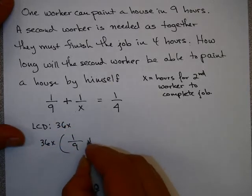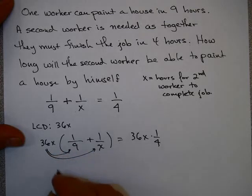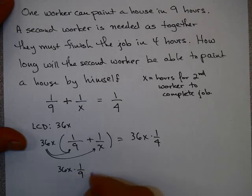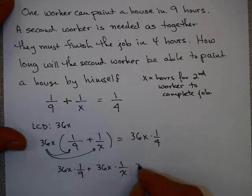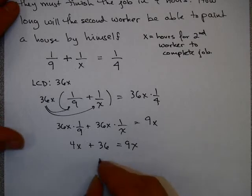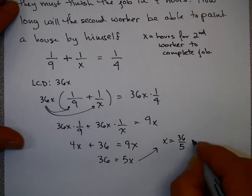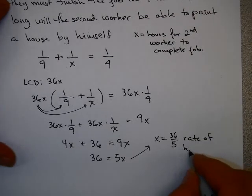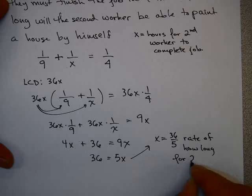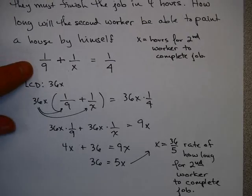Lowest common denominator is 36x. 36x times 1/9 plus 36x times 1/x equals 36x times 1/4. Distribute the 36x: that's 36x times 1/9 plus 36x times 1/x equals 36x divided by 4. Here you get 4x plus 36 equals 9x. Subtract the 4x, 36 equals 5x, so x equals 36/5. That would be the rate of how long for the second worker to complete the job.